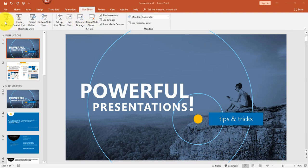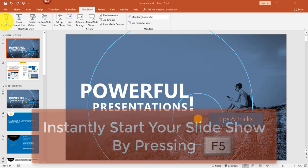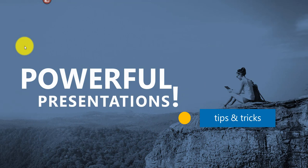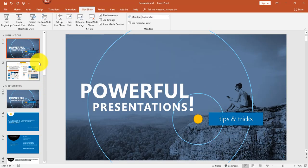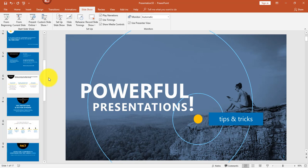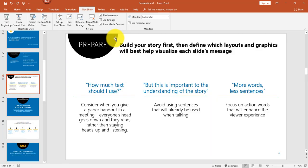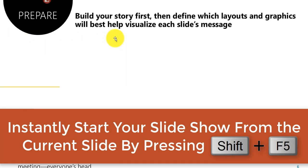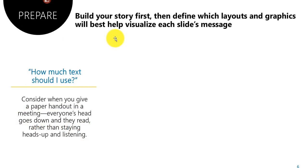Before I begin, I want to tell you a secret trick: you can instantly start your slideshow anytime with just one key — F5. If you press F5 it will immediately start your slideshow. And if you're on a specific slide, say slide six, and you want to start the slideshow from that slide, just hold Shift and press F5.